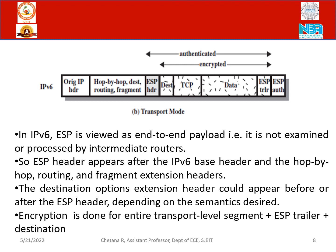In IPv6, ESP is viewed as an end-to-end payload — it is not examined or processed by intermediate routers. The ESP header appears after the IPv6 base header, along with hop-by-hop, routing, and fragmented extension headers — all of these are checked. The destination options extension header could appear before or after the ESP header, depending on the semantics required. Encryption is done for the entire transport-level segment plus trailer plus destination.